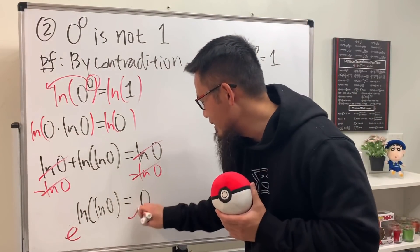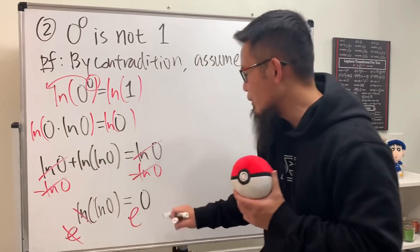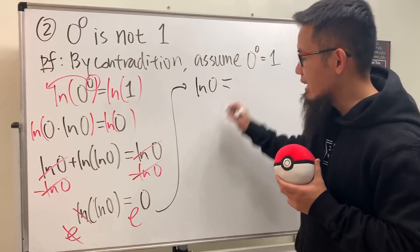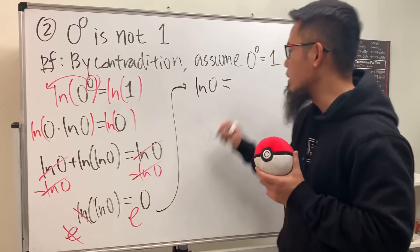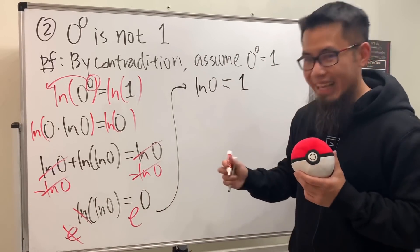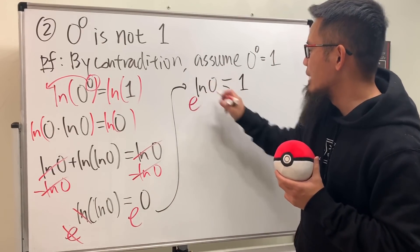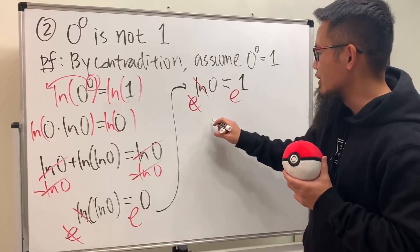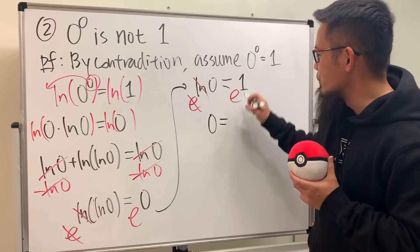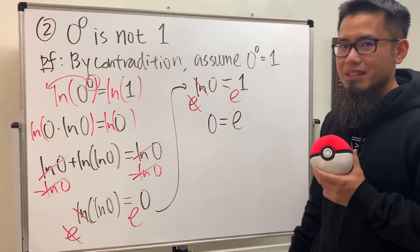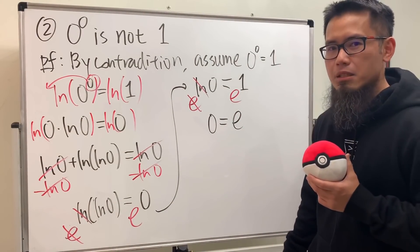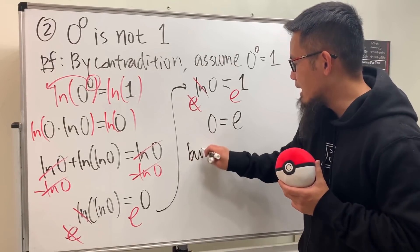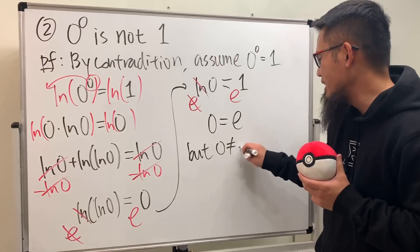Now raise both sides as powers of e so that e and ln cancel. On the left we get ln(0) and on the right e^0 equals 1. Do this again: raise both sides as powers of e, and we get zero equals e. Of course this is false — we know zero ≠ e.